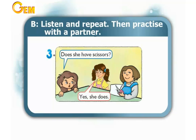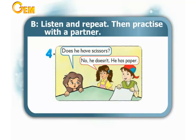3. Does she have scissors? Yes, she does. 4. Does he have scissors? No, he doesn't. He has paper.